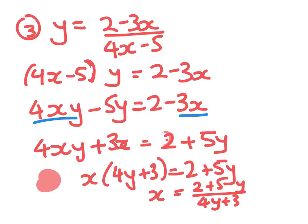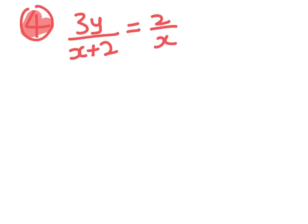So number 4 and 5 are very slightly different. Okay, the difference with number 4 is that I now have x terms on both sides of the question. All right, but hopefully you can see that what we're going to do here is clear the fractions out first. So I'm going to do this by timesing both sides by x.